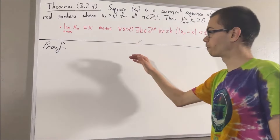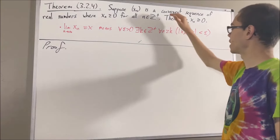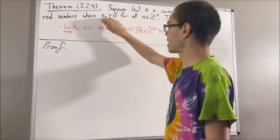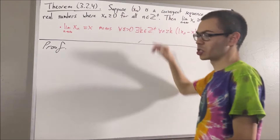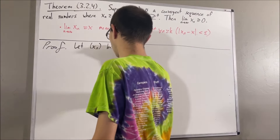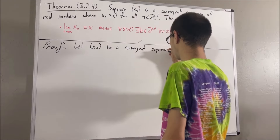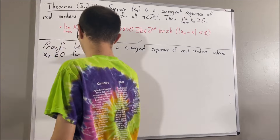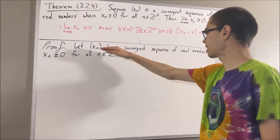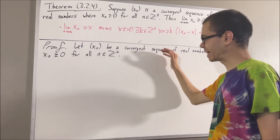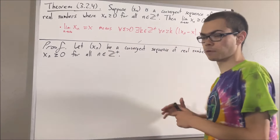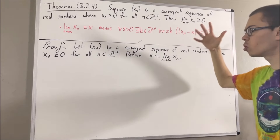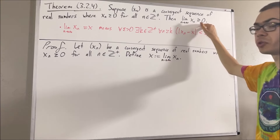Okay, so now let's get into the proof. To start out, let's give ourselves a convergent sequence of real numbers, xn, and let's assume that xn is greater than or equal to zero for all positive integers n. And since xn is a convergent sequence, we'll say that x is the value that xn converges to. And our whole goal is to show that x is greater than or equal to zero.